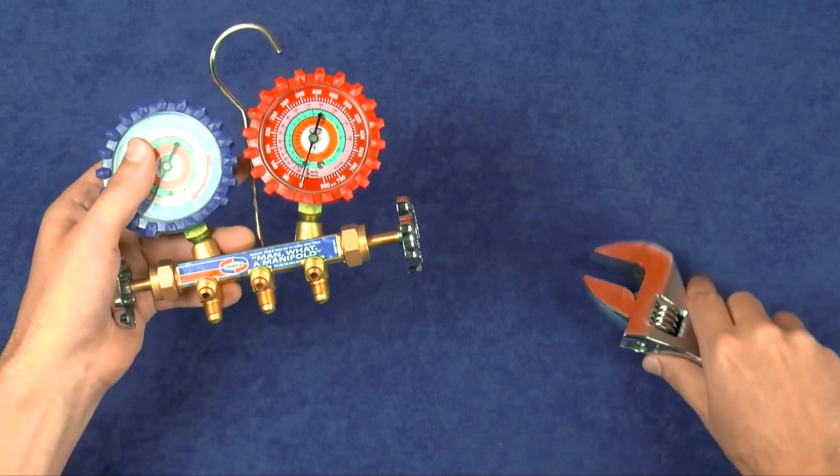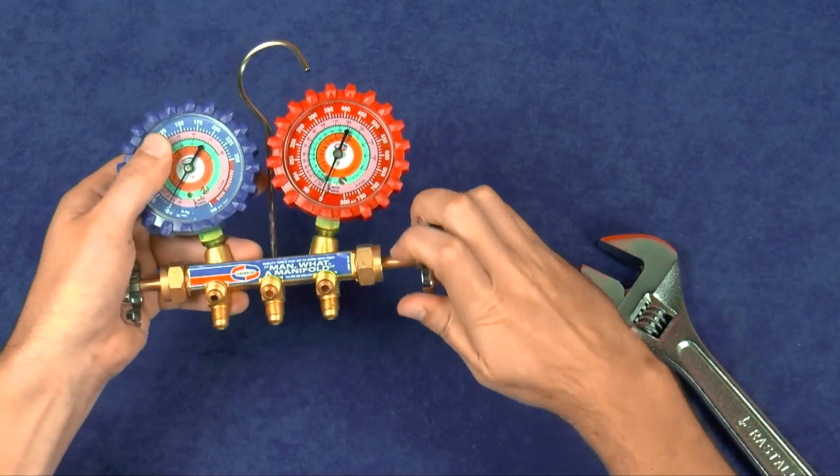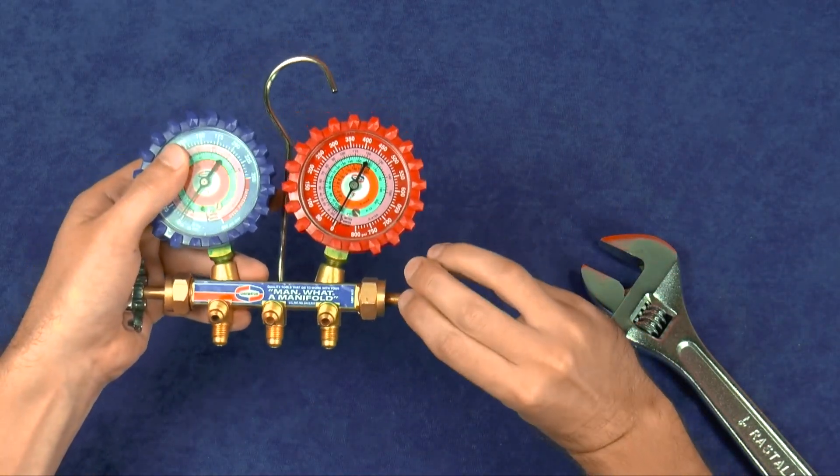If the hand wheel feels tight and is difficult to turn, you may have over-tightened the packing nut and should loosen it slightly.